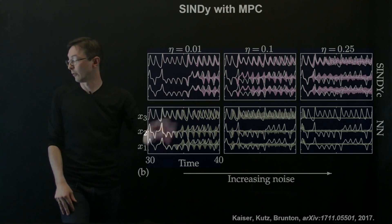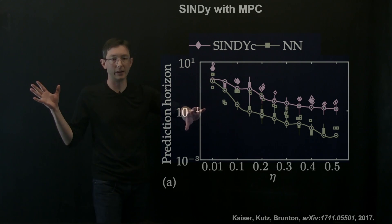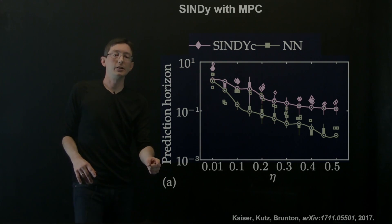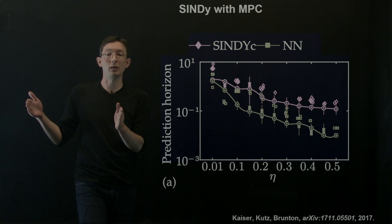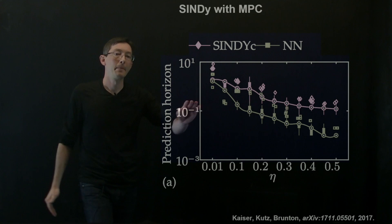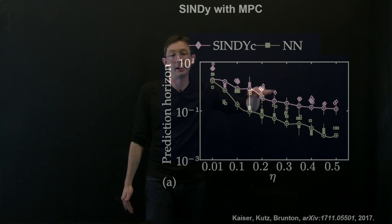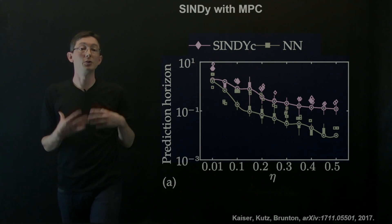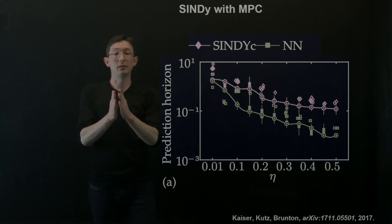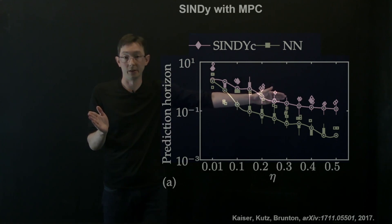Here's a distillation of that first figure: as we increase the noise magnitude eta, we can see what is the prediction horizon — how long can I predict into the future before my model deviates beyond an acceptable tolerance. Consistently, as noise increases, SINDYc has a larger prediction horizon than neural networks, which means that it should be more useful for model predictive control. The SINDYc model agrees with the actual true measurement data for longer, even with increasing noise.